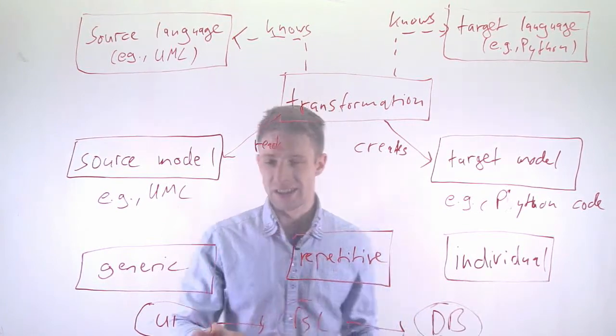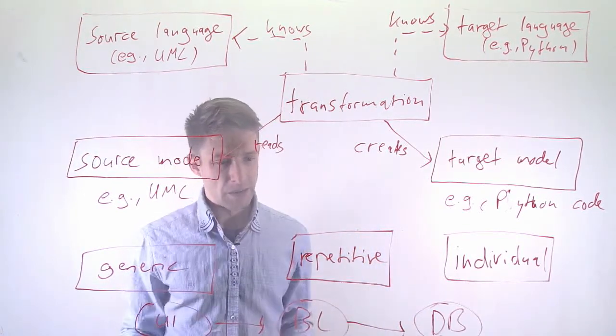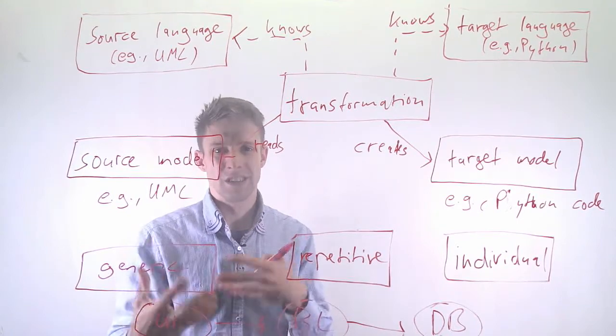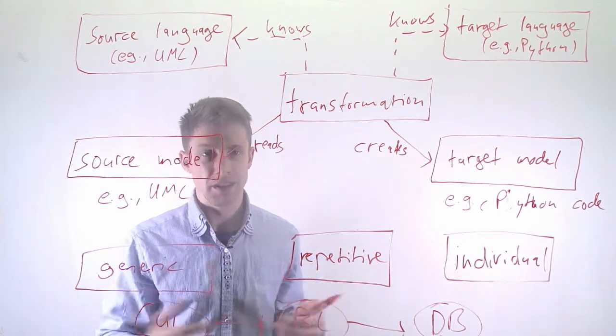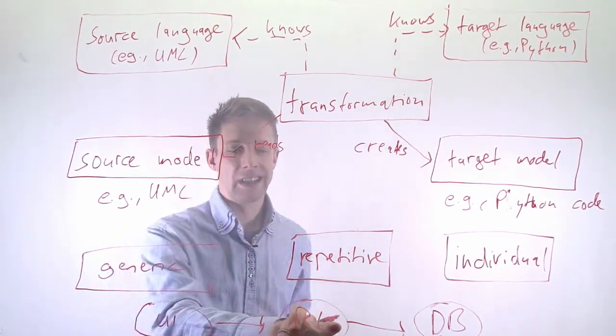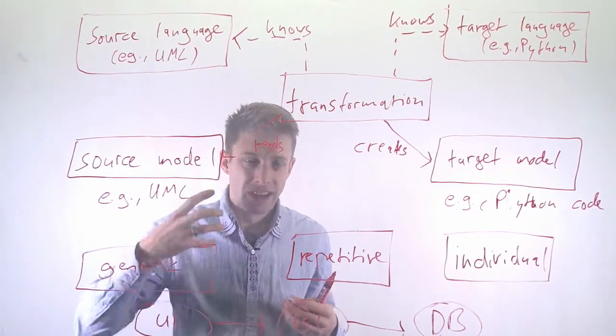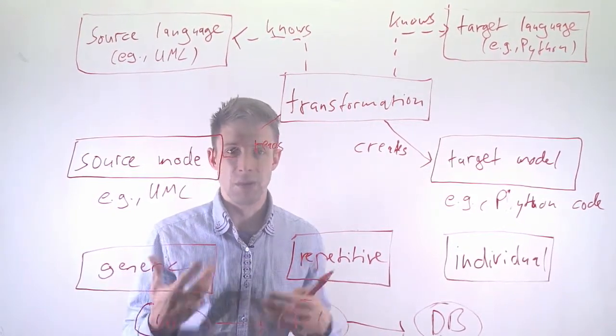And then finally, you have the individual code. And that's certainly in this case, it's maybe restricted to actually the UI. There are some special things for the user experience or having a certain look and definitely the business logic. What is your software actually about? What is it doing? Like the rules, the behavior that might be individual.